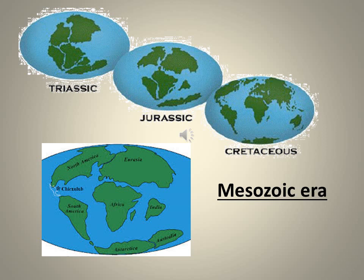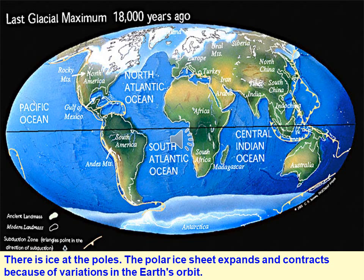The Mesozoic era is called the Golden Age of Reptiles and is divided into the Triassic, Jurassic, and Cretaceous periods — most of you are familiar with the Jurassic Park film. This is how the continents drifted during the Mesozoic era. By the end of the Mesozoic, the continents slowly took up their original positions as we see them today, approximately 18,000 years ago. Polar ice sheets expand and contract due to variations in the Earth's orbit, resulting in ice ages.